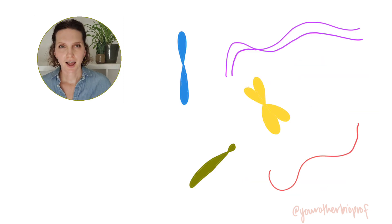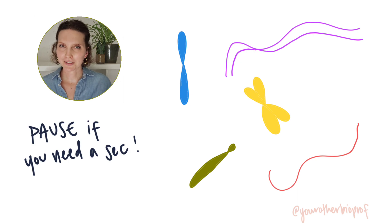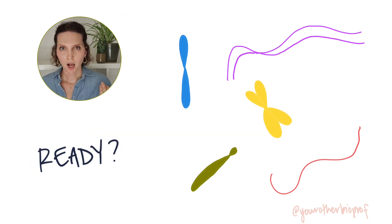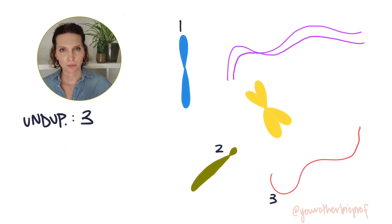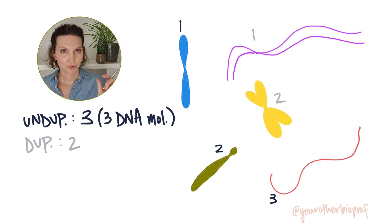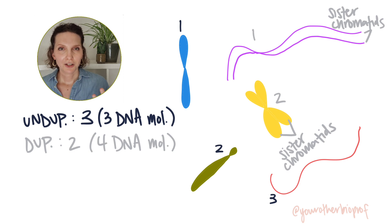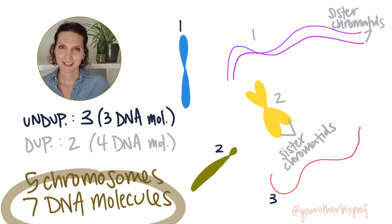In the picture I've got a few chromosomes. How many molecules of DNA do you see, and how many chromosomes? We've got three unduplicated chromosomes — each consisting of a single molecule of DNA, so that's three. And we have two duplicated chromosomes with two sister chromatids each, giving two DNA molecules each. So here we're looking at a total of five chromosomes and seven molecules of DNA.